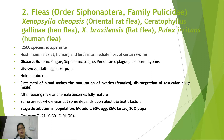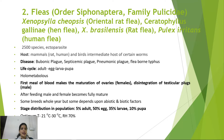Fleas belong to the order Siphonaptera and family Pulicidae. Examples include Xenopsylla cheopis (oriental rat flea), Ceratophyllus gallinae (hen flea), Xenopsylla brasiliensis (rat flea), and Pulex irritans (human flea). There are more than 2,500 ectoparasitic species, with mammals — mainly rats and humans — as primary hosts. Birds may act as intermediate hosts. Diseases caused include plague and flea-borne typhus.